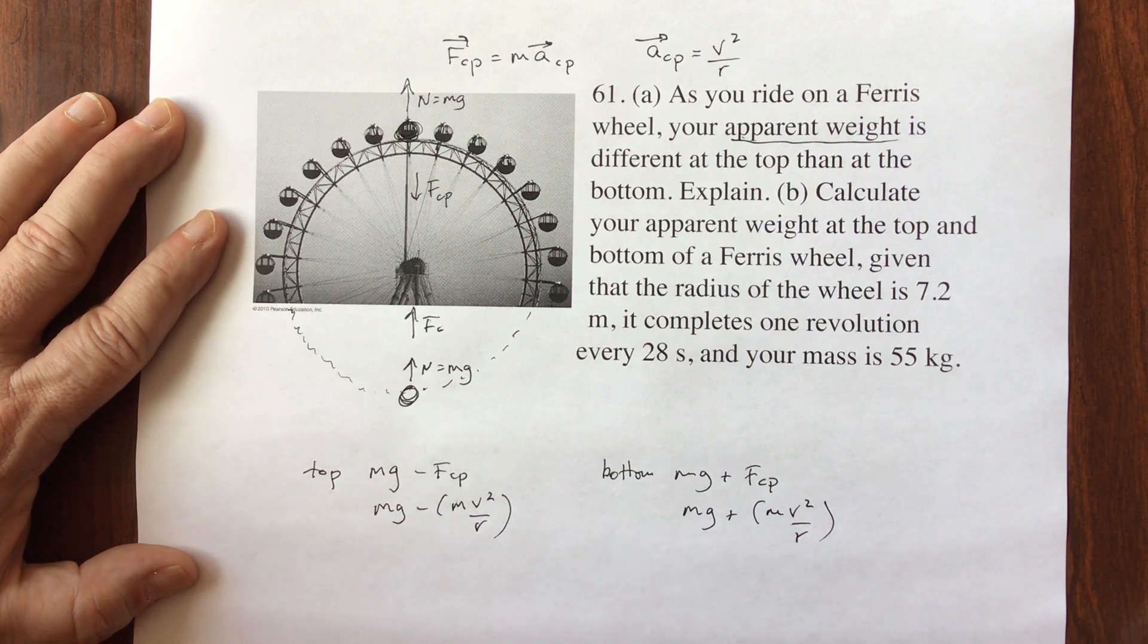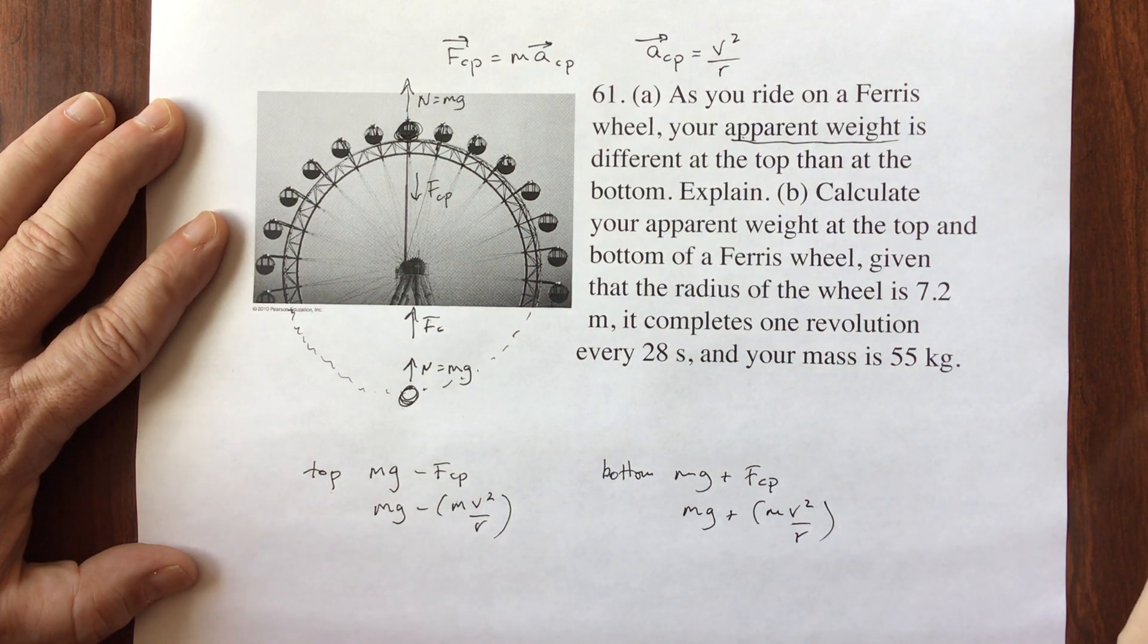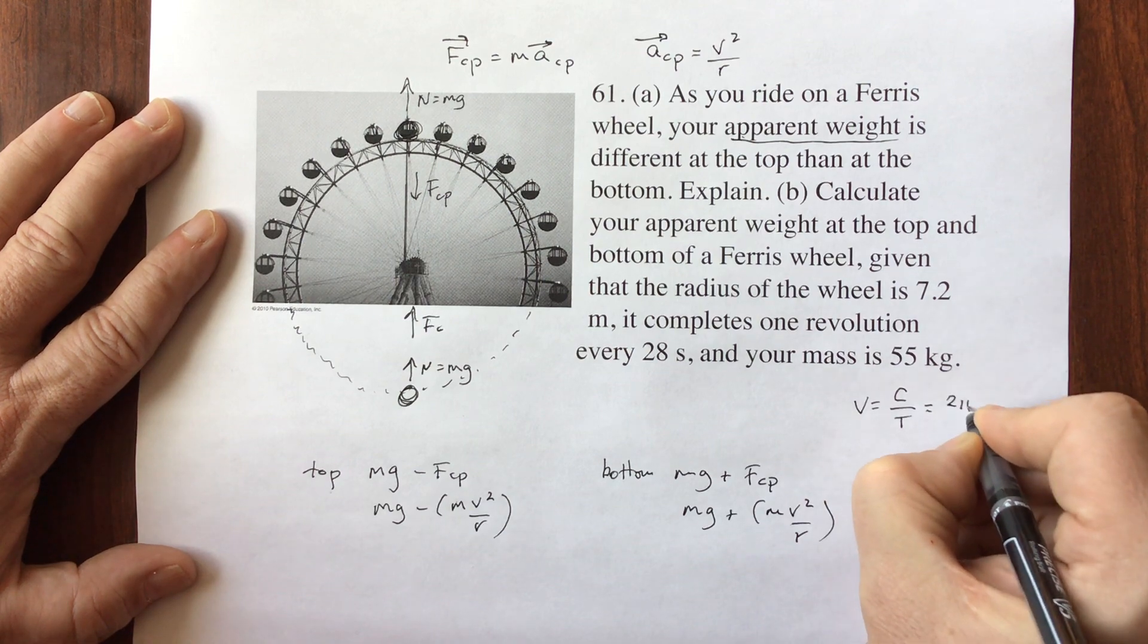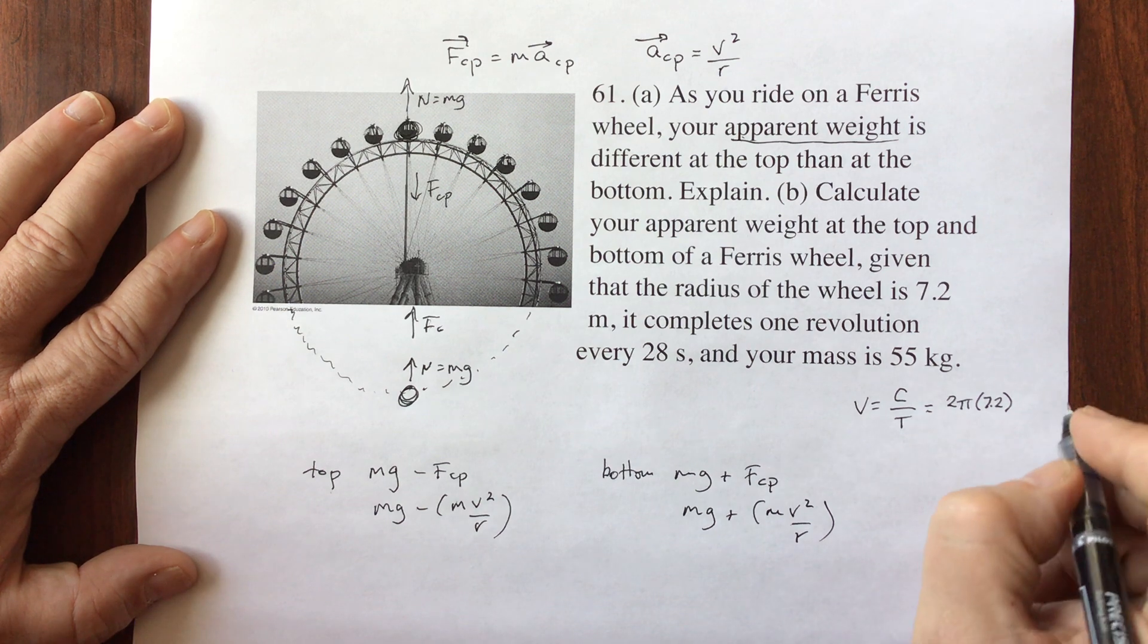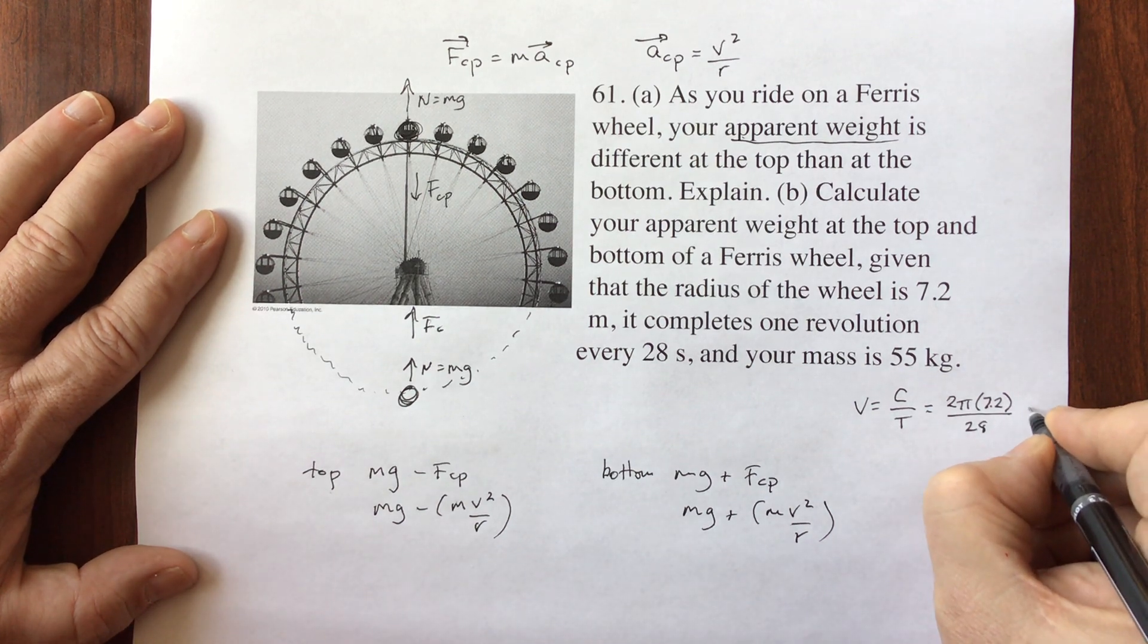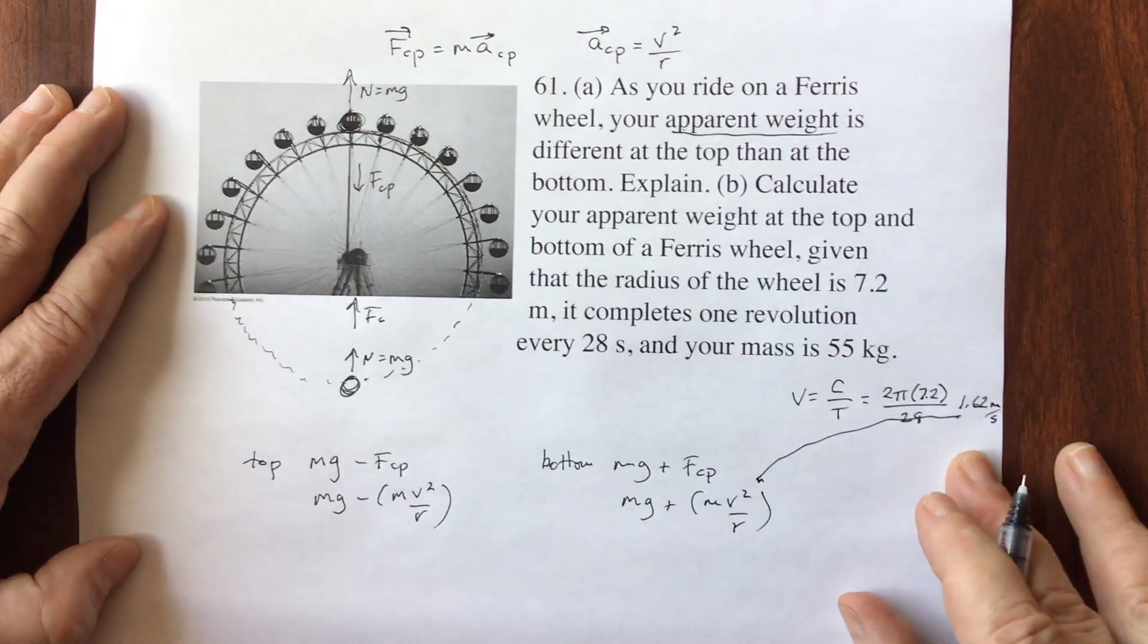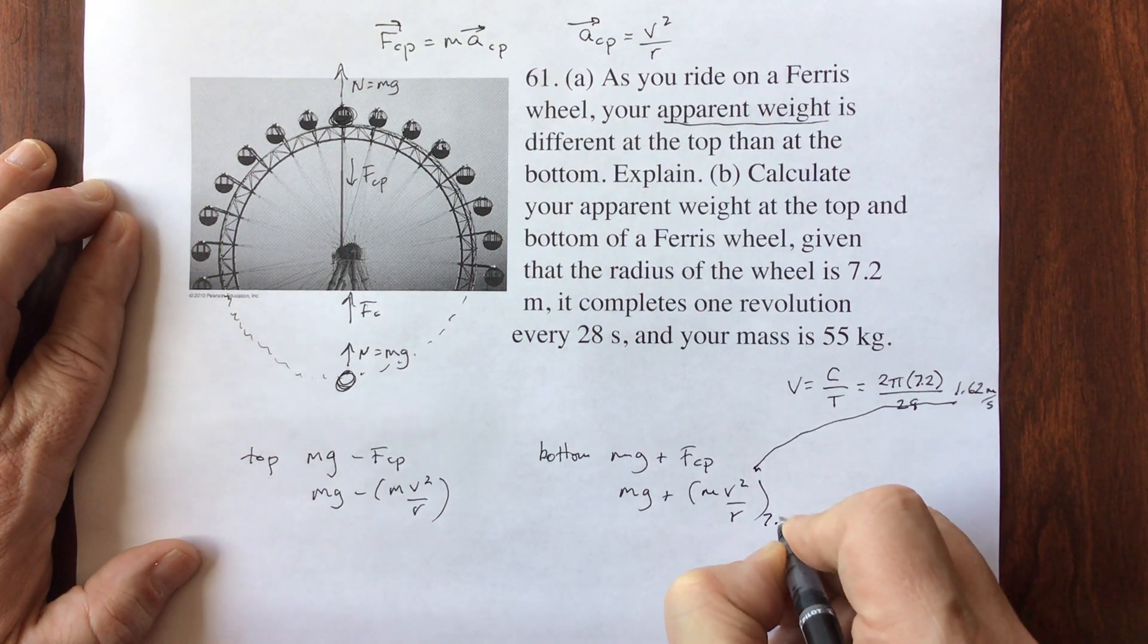All right, so let's start putting in some numbers. I've got r is 7.2. Let's find velocity. My velocity is my distance over my time. So my distance is 2 times pi times the radius, 2 pi r, and my time is 28 seconds. That gives me 1.62 meters per second as my speed. And so 1.62 goes in for v.